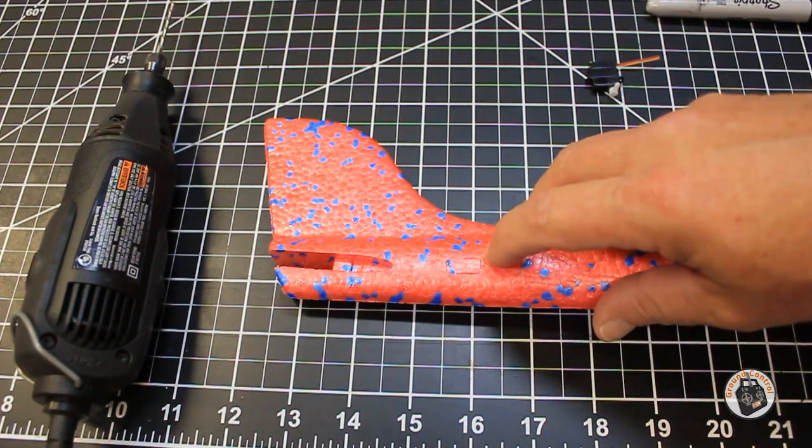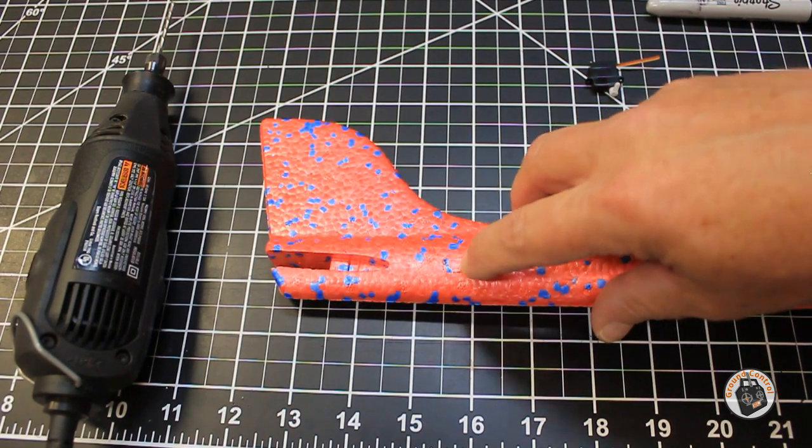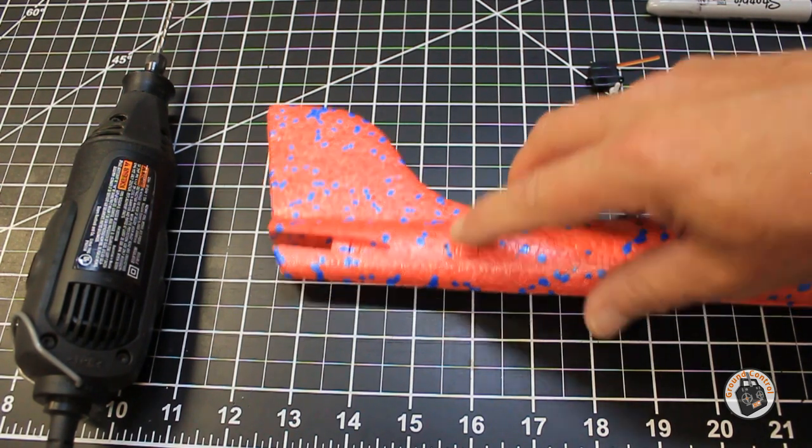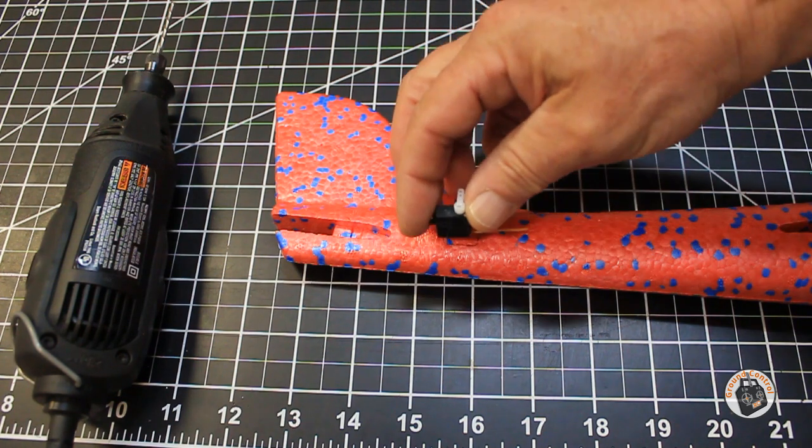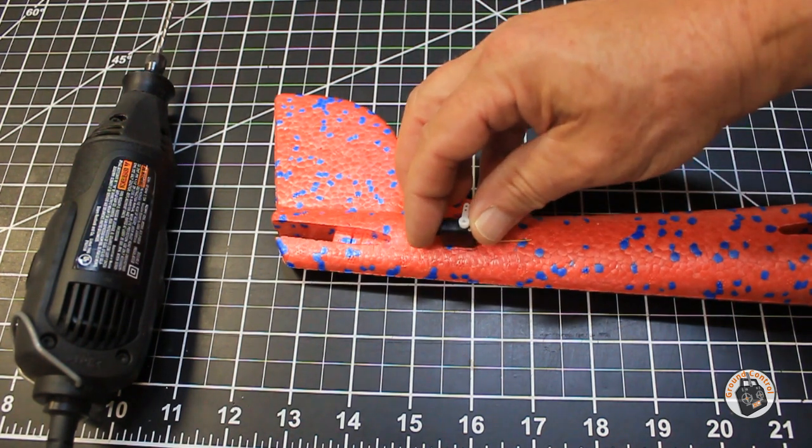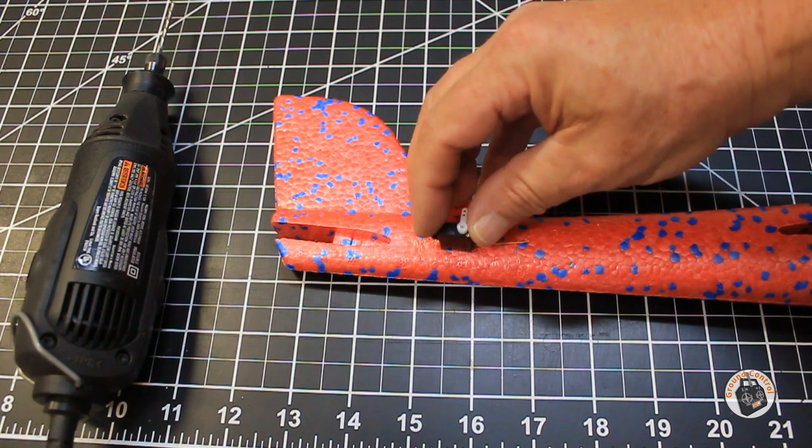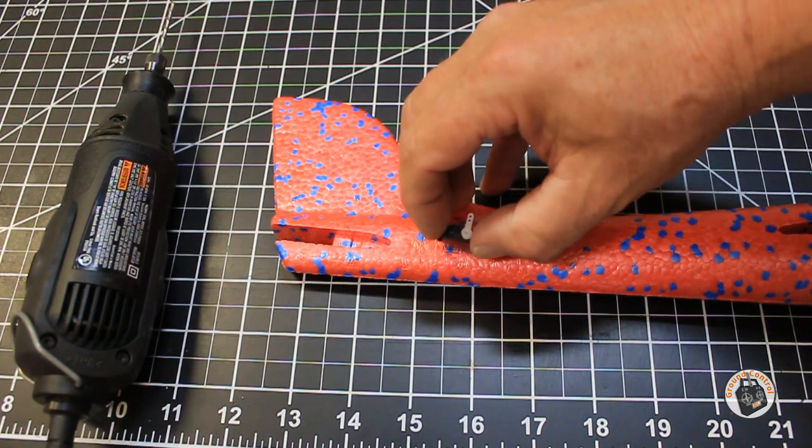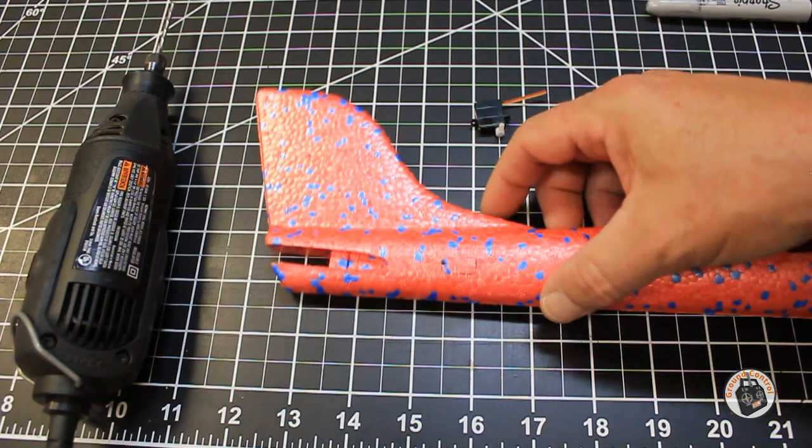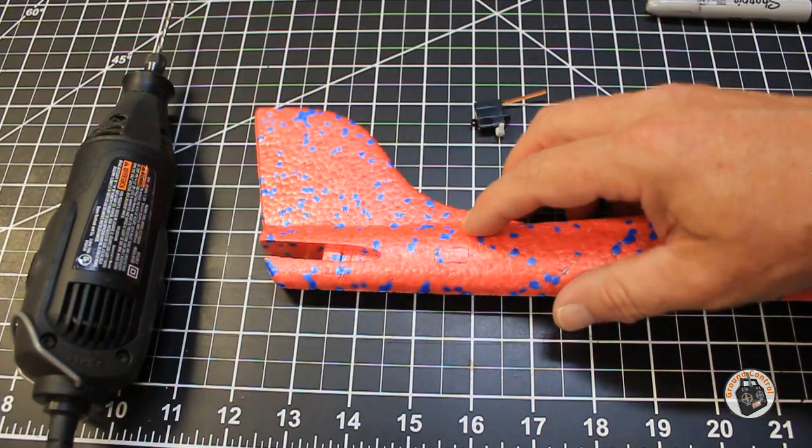I'm going to go ahead with my Dremel tool, and I'm going to start carving this out. When I get it carved out and I get it to a point where my servo fits nice and snug, and it seats completely with the tabs flush against the side of the fuselage, I'll bring it back, and we'll take a look at exactly what it looks like.